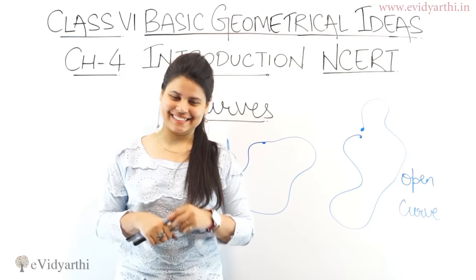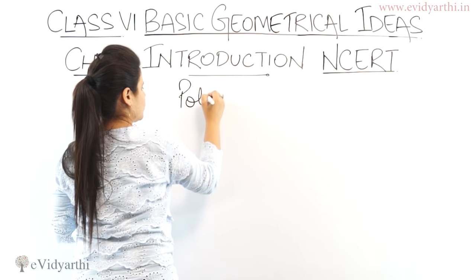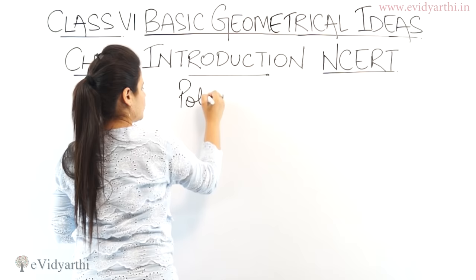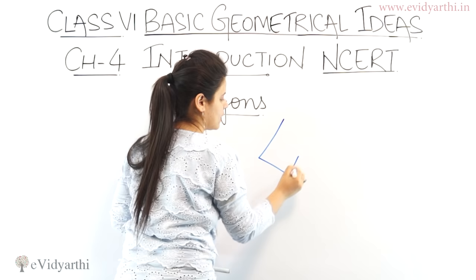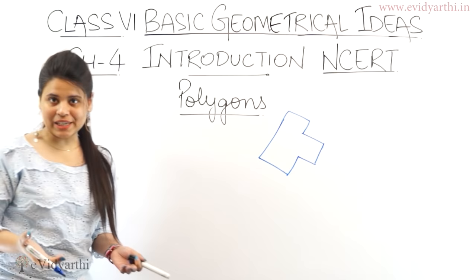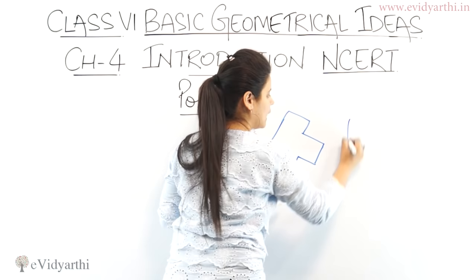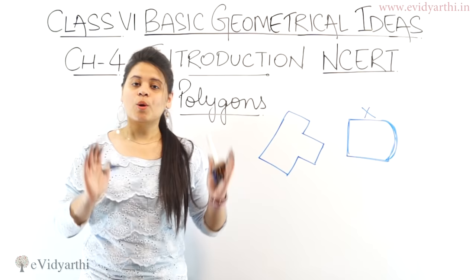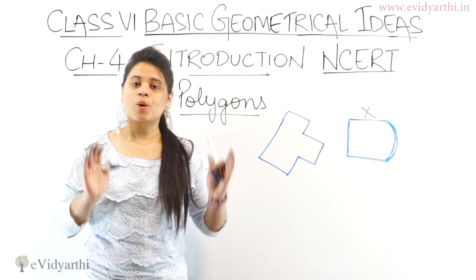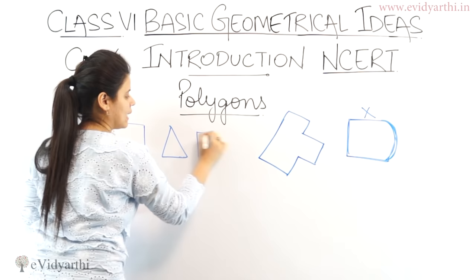The next topic is polygons. Polygons are shapes that are made of line segments. If I draw any shape here using straight lines, like this, this is a polygon because this shape is made of line segments. But if there is a curve involved, then it is not a polygon. So any shape made entirely of line segments is a polygon. Your square, triangle, rectangle — all these shapes are polygons because they are made of line segments.